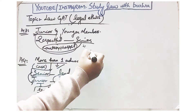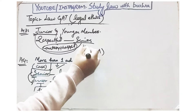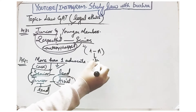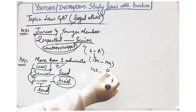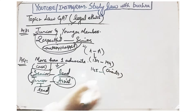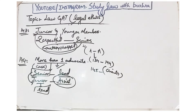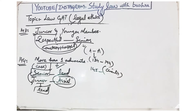Ye thi hamari aaj ki discussion — conduct of advocate with regards to other advocates, Rule 134 se Rule 144 tak. Next video mein hum discuss karenge ki ek advocate ka apne clients ki taraf ravaiya kaisa hona chahiye. I hope aapko ye lecture samajh mein aaya hoga. Agar aapko ye video achi lagi to like karein, comment karein, aur channel ko subscribe karna na bhoolein. Thank you so much for watching. Allah Hafiz.